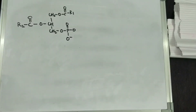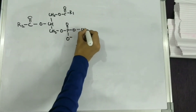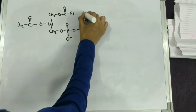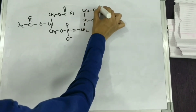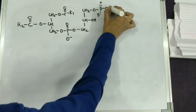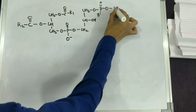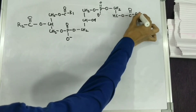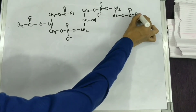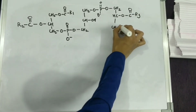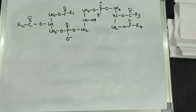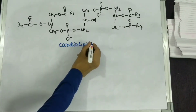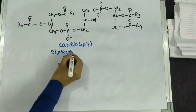Coming to the complex part: when you attach the phosphate group to a glycerol molecule and the end of the glycerol molecule to another phosphatidic acid molecule, what you get is known as cardiolipin. This structure is also known as diphosphatidylglycerol.